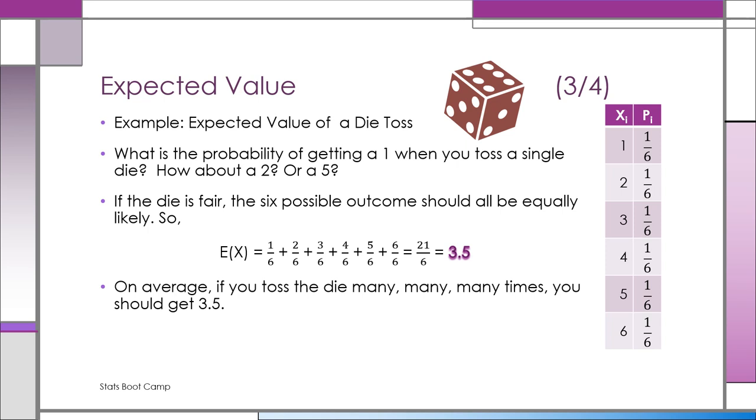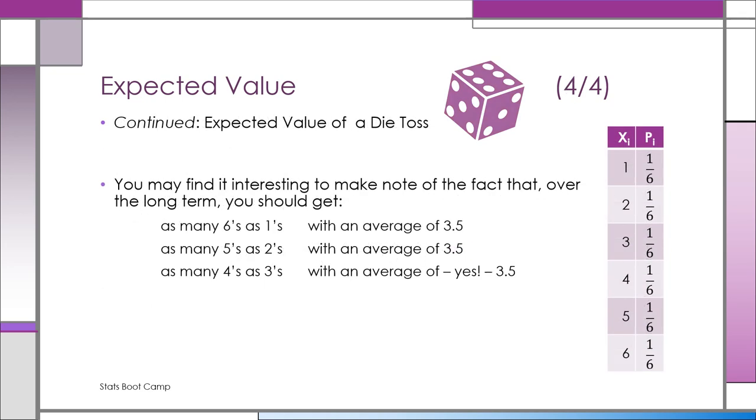It's like a long run average. So the expected value, if you toss a die, is 3.5. And here you can see the logic. If you keep doing this over and over again, tossing that die, you'll get as many 1s as 6s. That averages out to 3.5.